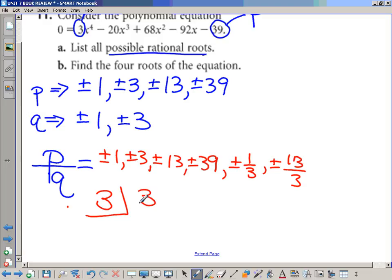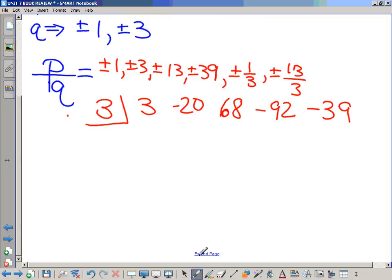If 3 appears to be a good root, take 3 and divide it into these coefficients: 3 from the x to the fourth, negative 20 from x cubed, 68 from x squared, negative 92 from x, and negative 39 on the end. If 3 is a good root, we're going to get a remainder of 0. So we're all set up and ready to launch. Let's run through this.